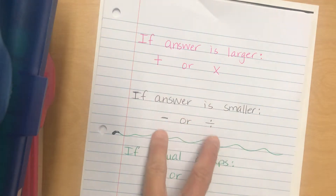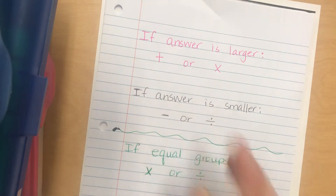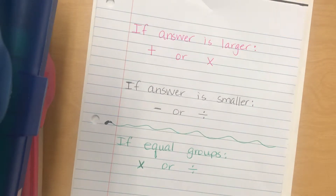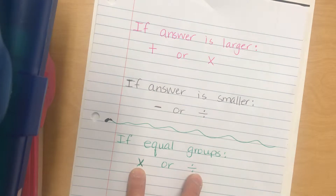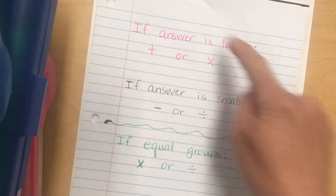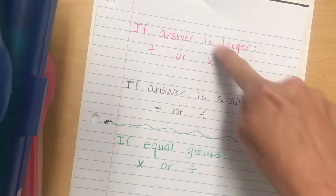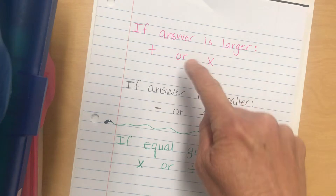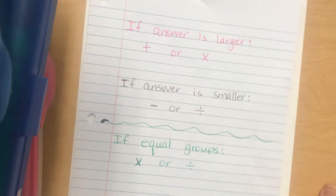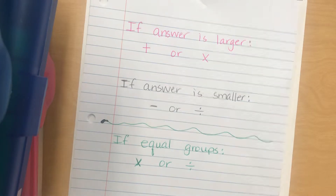If it's larger we've narrowed it down to two, if it's smaller we've narrowed it down to two. Then we ask ourselves: do I have equal groups? If I have equal groups then it has to be one of those two. If you don't have equal groups then you add or subtract. So: adding or subtracting means not equal groups; multiplying and dividing means equal groups.